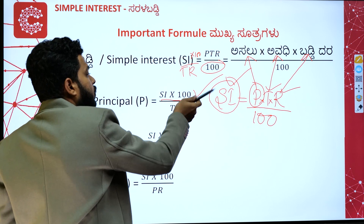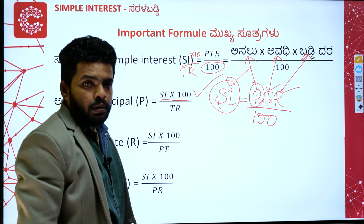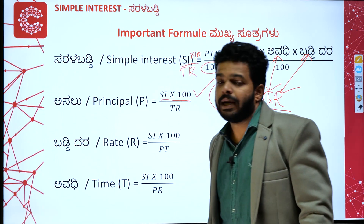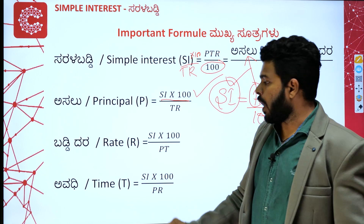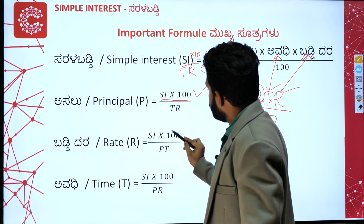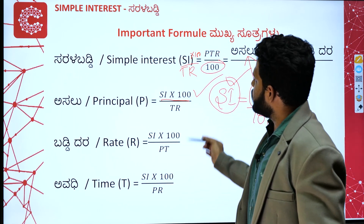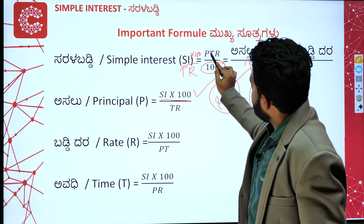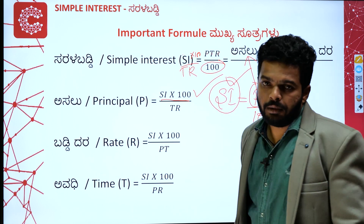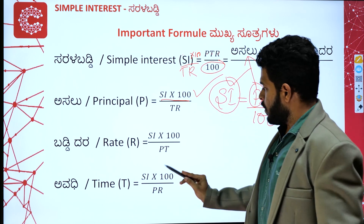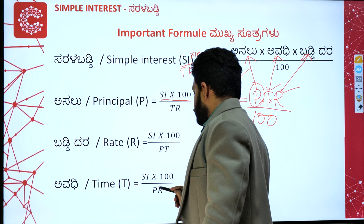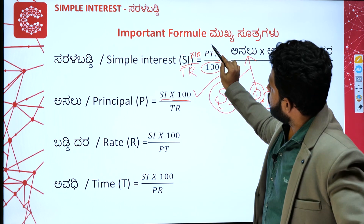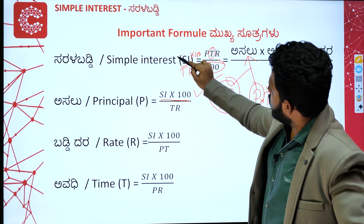Next, rate R is equal to SI into 100 divided by PT. And time T is equal to SI into 100 divided by PR. These are the derived formulas from the main simple interest formula.